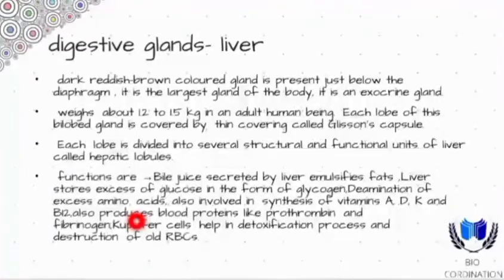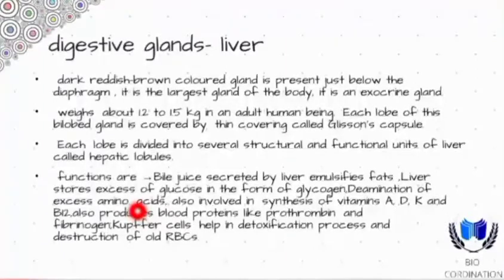After the old RBCs are destroyed, they go to the spleen, which is an organ we call the graveyard of the RBCs. This completes our overview of the liver.